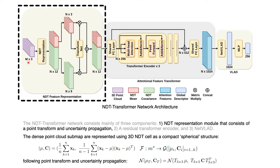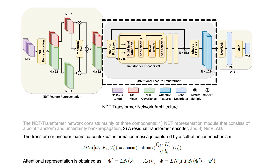The input of the NDT representation module is a 3D point cloud submap. The submap is represented using 3D NDT cells, and each cell is a multivariate Gaussian. With a transform net, the 3D points and covariance matrices can be transformed separately to form the cells in a canonical view. The NDT representation is the input of an attention feature transformer module, which is implemented using a residual transformer encoder architecture. The transformer encoder learns contextual information captured using a self-attention mechanism.